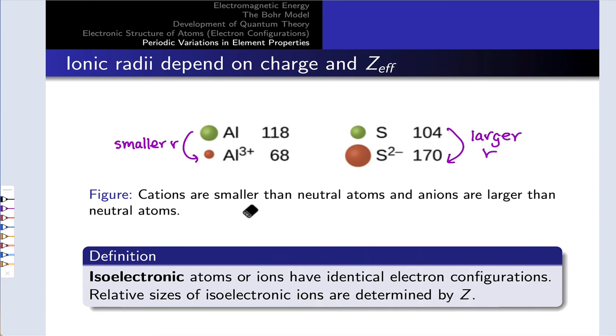A helpful concept for understanding the sizes of ions is this idea of isoelectronic atoms or ions. They have identical electron configurations, and we alluded to this in writing electron configurations of ions. We can move to the left or right on the periodic table depending on whether we've lost or gained electrons, respectively, and look at the electron configuration of that neutral element to write the configuration of an ion.